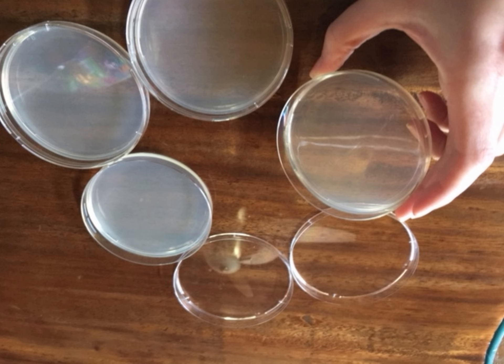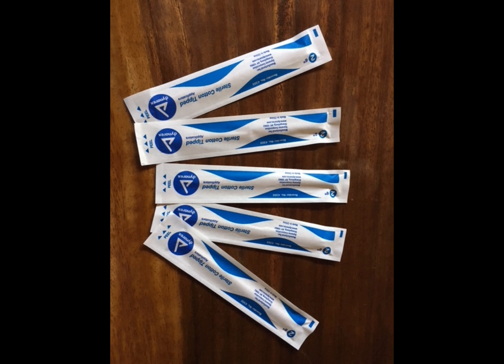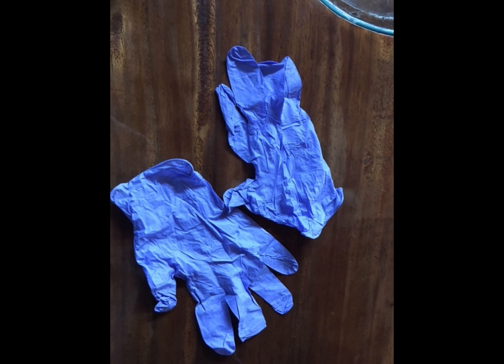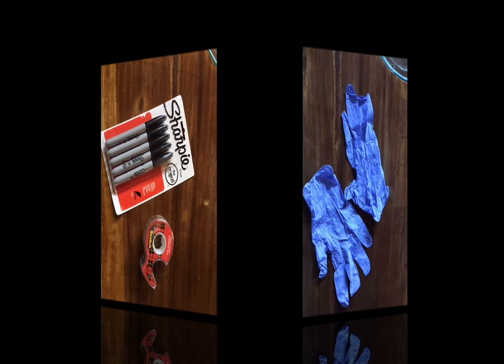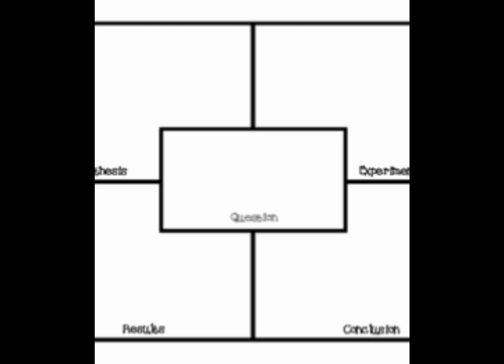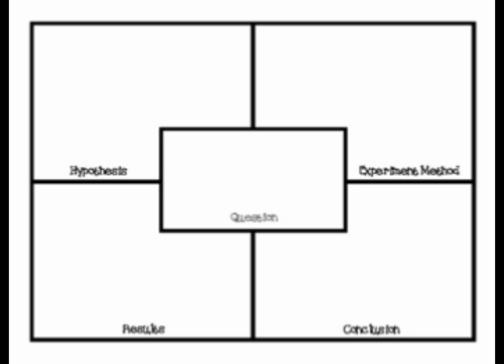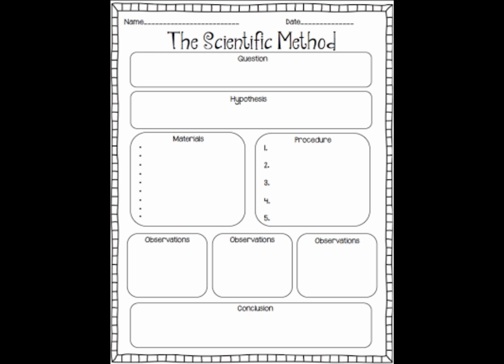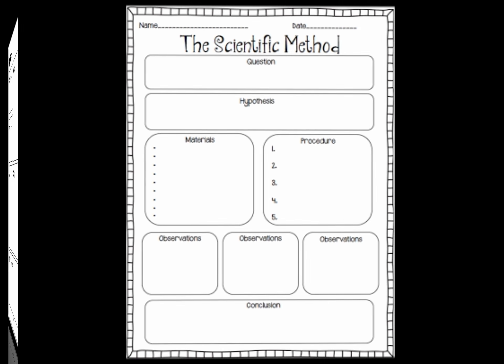Before students begin collecting their samples, you first need to make sure you have the following items on hand: petri dishes with agar jelly, large cotton swabs, gloves so as to prevent contamination, tape and sharpies to seal and label the petri dishes, and graphic organizers. There are many different types of graphic organizers you can use for this lesson. Using graphic organizers is a good scaffolding tool and a great way to differentiate learning.